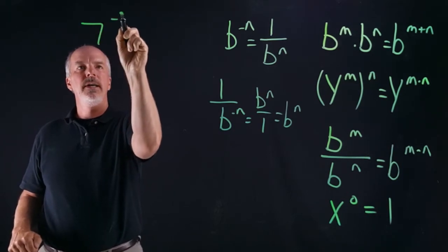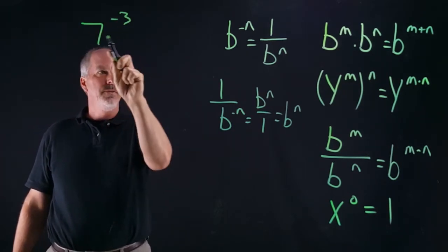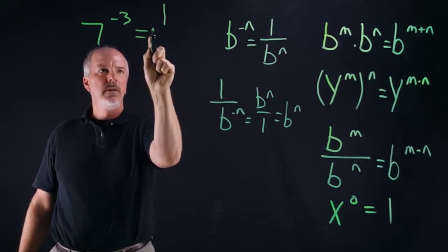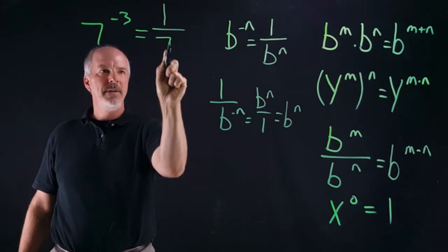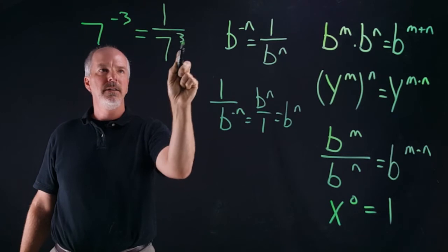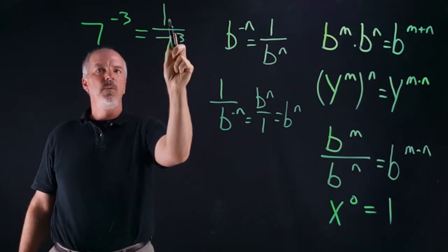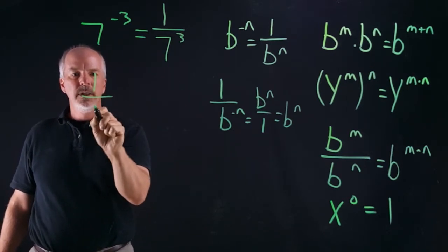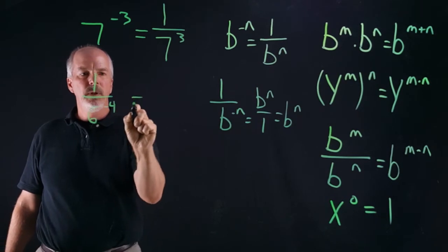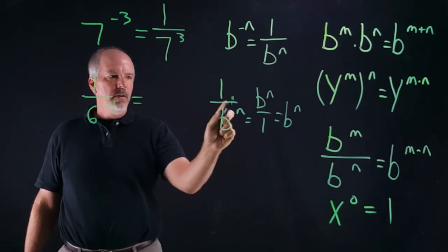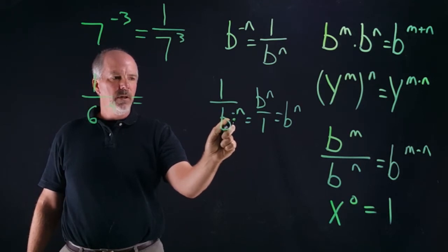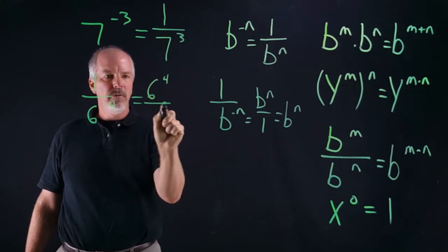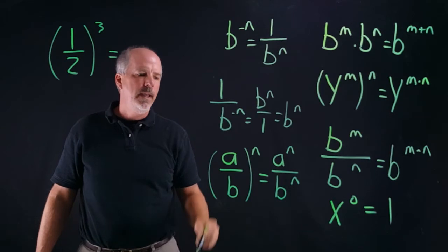So let's say we have seven to the negative three. We put a one over it, move the seven to the negative three to the denominator, and change it to positive — so seven to the negative three equals one over seven to the third. Now let's say we have one over six to the negative four. When we have a negative exponent in the denominator, we move it to the numerator: six to the fourth over one.